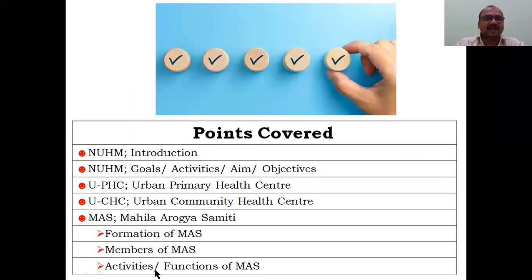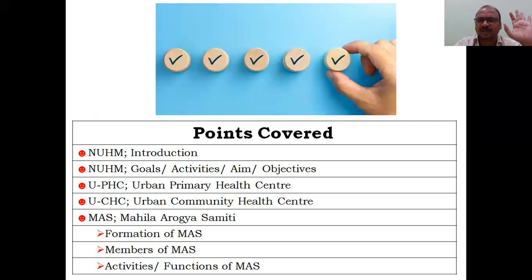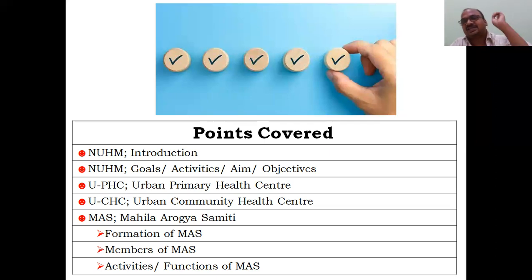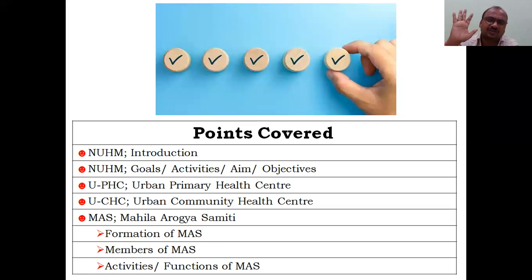The points covered here include NUHM introduction, what this program is, its goals, activities, aims, and objectives. We will also cover UPHC — Urban Primary Health Center — and Urban Community Health Center (UCHC). The main important point is MASS. We will cover all of these: UPHC, UCHC, and MASS, including how MASS is formed, who its members are, and its activities and functions. Mahila is the key point in this topic.